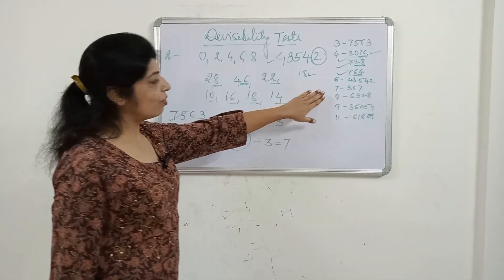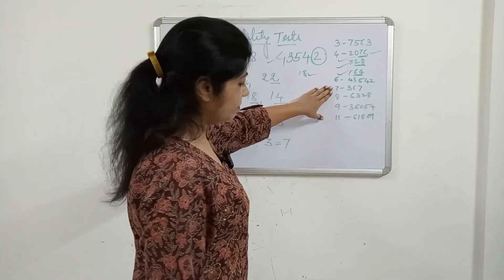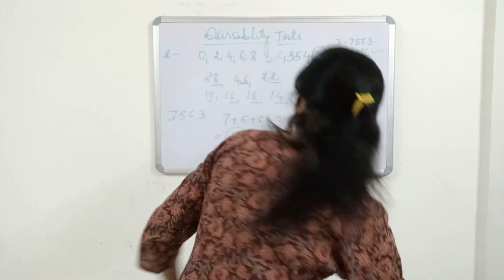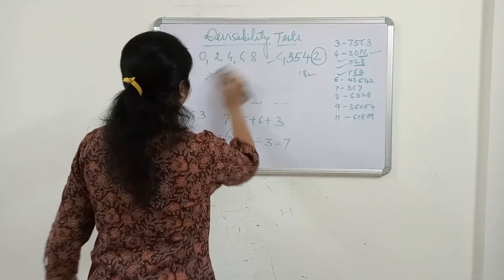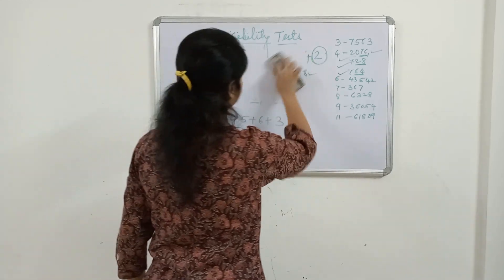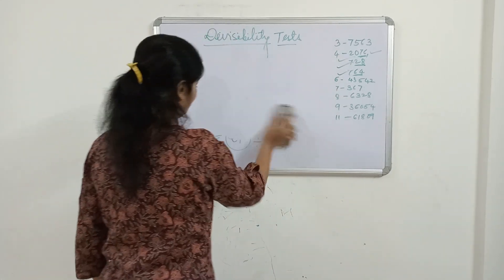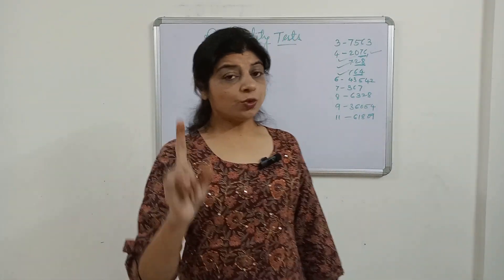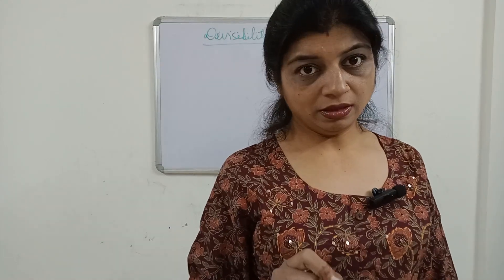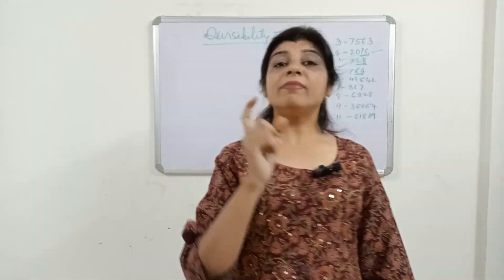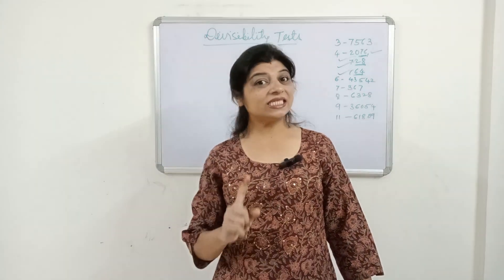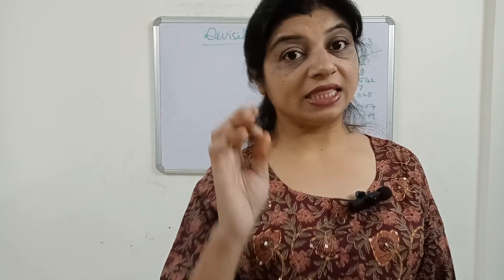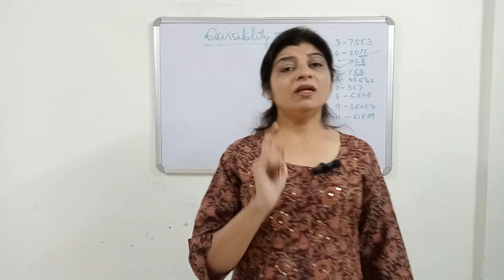Now moving to the divisibility of 7. The divisibility of 7 states — listen carefully — the number is divisible by 7 then and then only when the difference between twice the last digit and the remaining number formed is either 0 or divisible by 7.